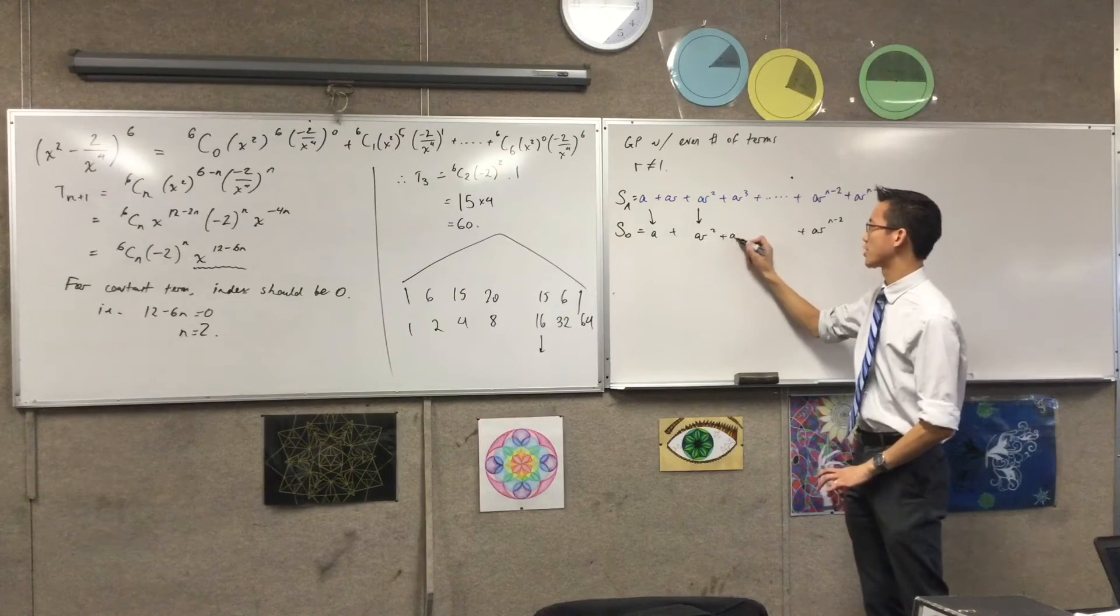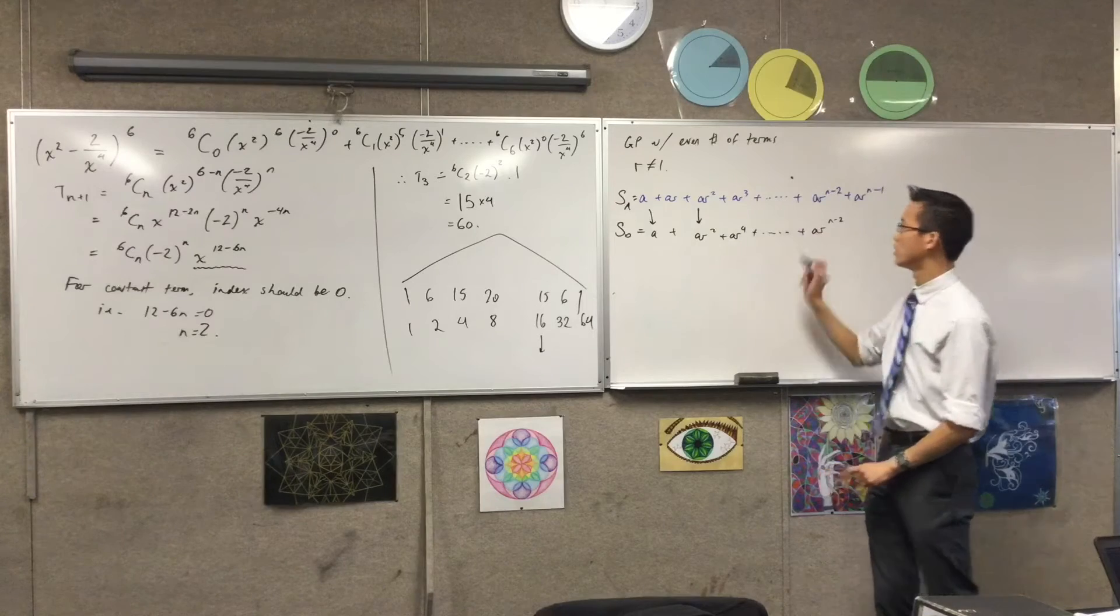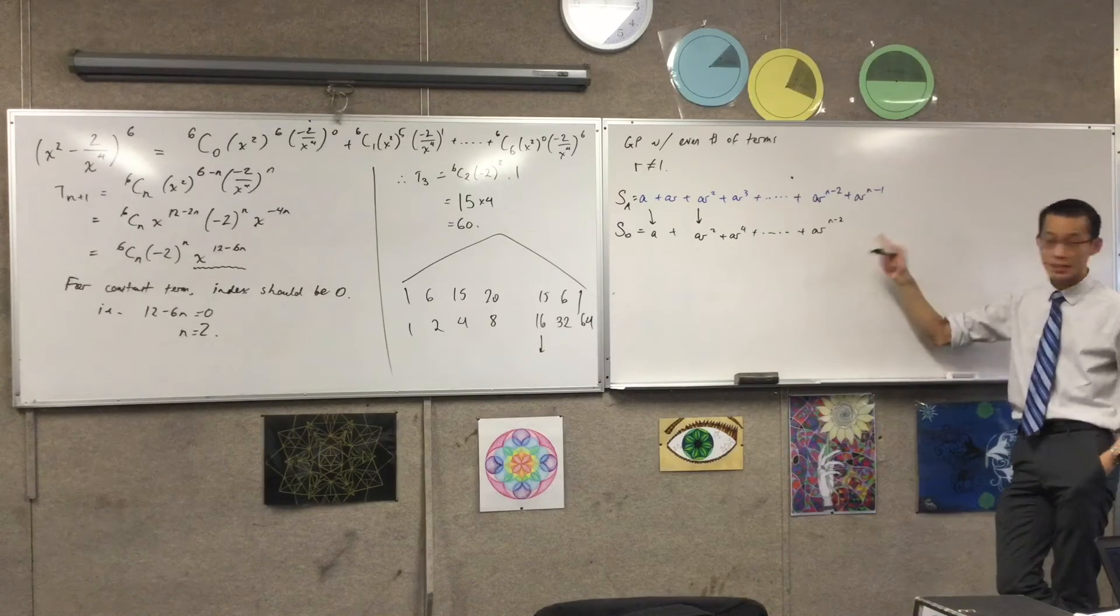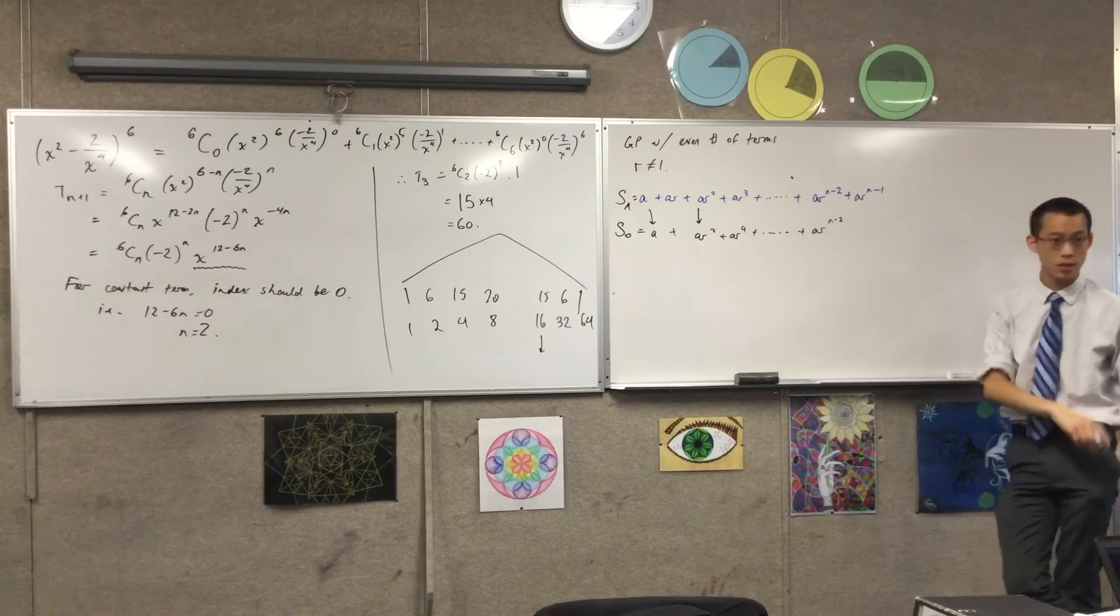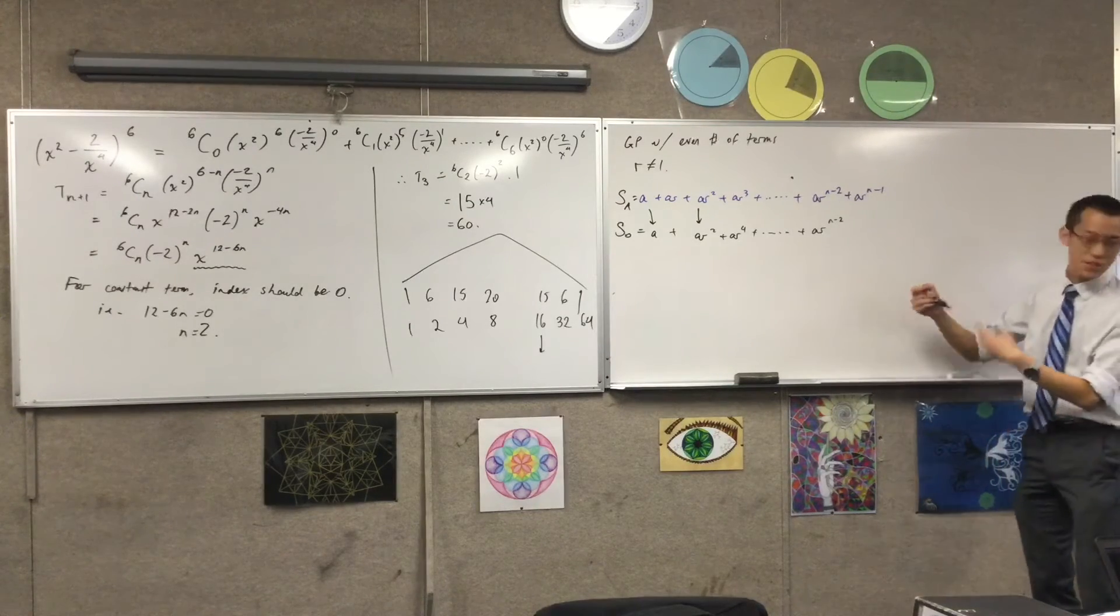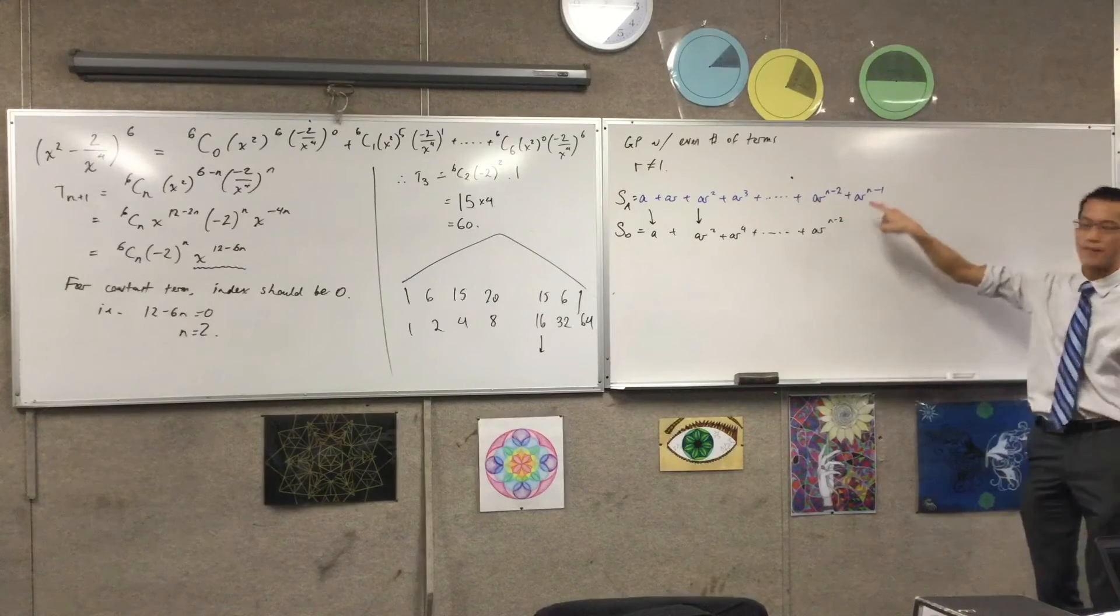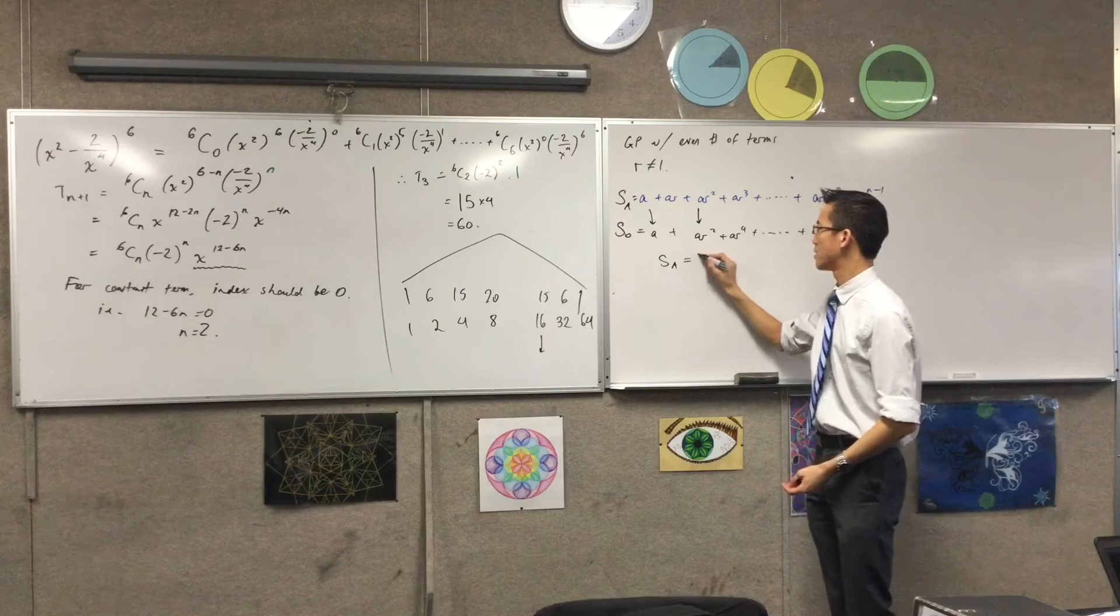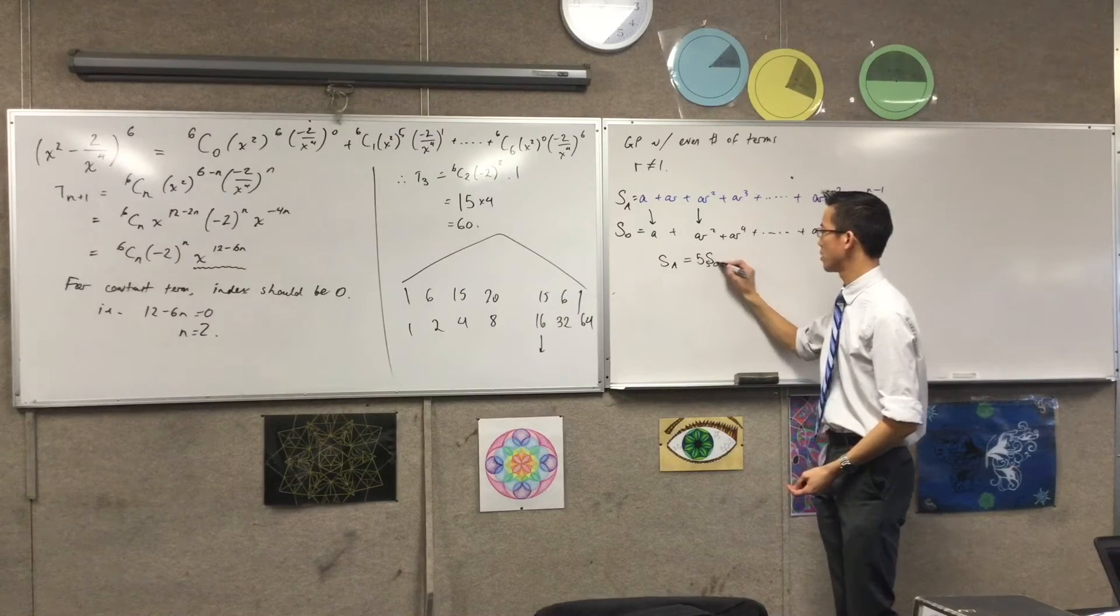So plus, I should actually put AR to the 4 here so I have a whole pattern. So this is what I've got. This is the sum of the odd terms. And here's what's really about this, right? The question simply tells me that this is five times bigger than this.